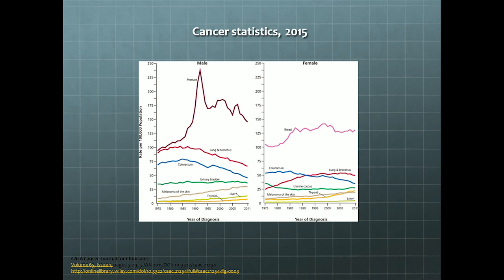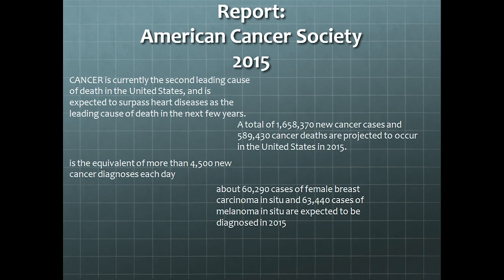Cancer statistics just published by the American Cancer Society show melanoma of the skin increasing steadily from 1975 to 2011 in men. Both incidence and mortality in men are increasing, and this is a problem. We're trying to educate men on how to prevent skin cancer. Women's incidence is also increasing, but the biggest increase — especially in mortality — is in men. Other cancers like bladder are pretty stable or going down; lung cancer is going down in men but unfortunately going up in women.